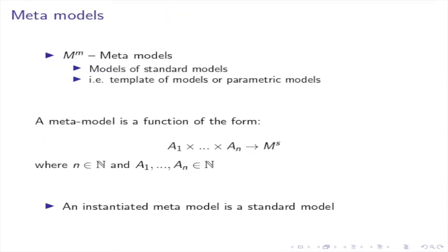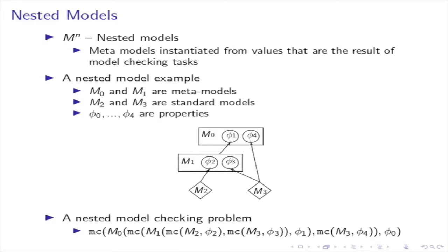Beyond standard models, we consider meta-models. These are models of standard models, also seen as templates or parametric models. A meta-model can basically be seen as a function which takes as input a given number of parameters and produces a standard model. The key takeaway is that there exists a process called meta-model instantiation which, given known parameters, produces a standard model that can be used in the scope of standard model checking. Now we are ready to introduce nested models. Nested models are meta-models instantiated from values as a result of model checking tasks.